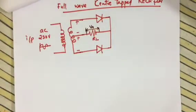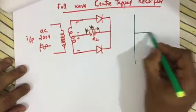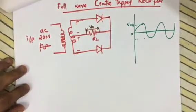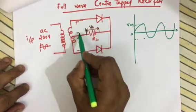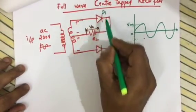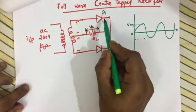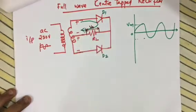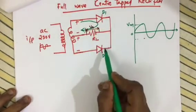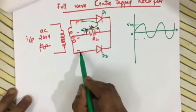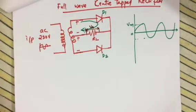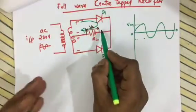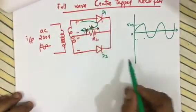During the positive half cycle, the upper terminal is positive and lower is negative, so D1 is forward biased and D2 is reverse biased. D2 is off, so no current flows through it. Current flows through D1 and the load resistor RL, giving a positive output half cycle.